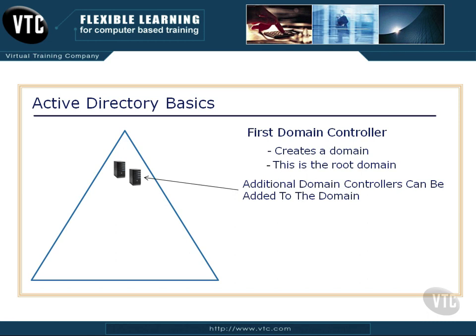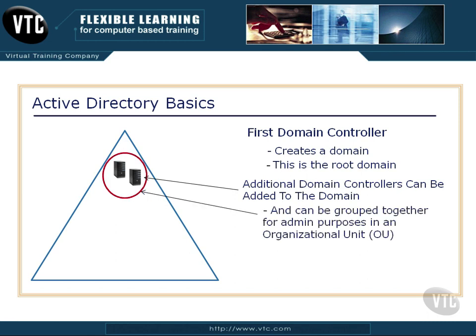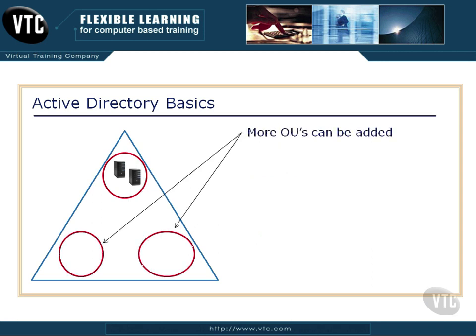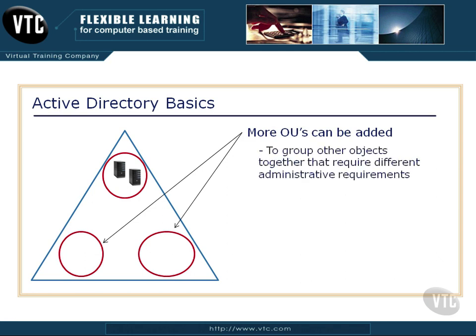I can add an additional domain controller to the domain, and then I can group those together in what's called an organizational unit for administrative purposes. I can add additional OUs to my domain to group other objects together that might require different administrative requirements. Notice we have another server in a different OU because I have different administrative functionalities on that — different administrative rights to different people or groups. Client machines can also be placed in their own organizational unit. I can apply group policy objects to these OUs, and the objects inside that OU pick up whatever settings that group policy is enforcing.